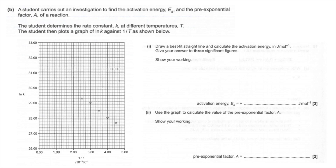Moving on to part B, it's all linked to the Arrhenius equation — it's on the data sheet so you don't have to remember it. The linearised form gives a straight-line equation: y = ln k, x = 1/T, gradient = −Ea/R, and y-intercept = ln A. We'll use both the gradient and y-intercept to answer parts 1 and 2 of B.